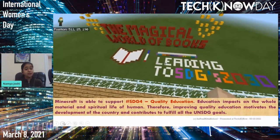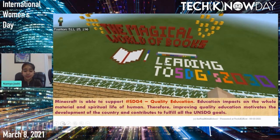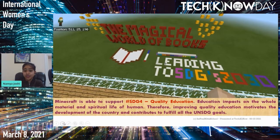The first tool — one of my favorites — is an application called Minecraft. I love it because it is able to support the UN SDG Goal Number 4, which is Quality Education. Education impacts the whole material and spiritual life of a human being; therefore, improving the quality of education motivates the development of a country and contributes to fulfilling the UN SDG goals.